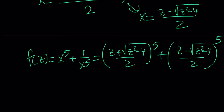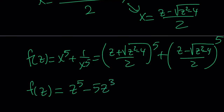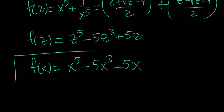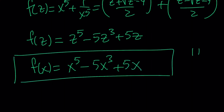We have a sum of two 5th powers where the binomial theorem applies. All the radicals cancel out because they appear with plus and minus signs. The result is f of z equals z to the 5th minus 5z cubed plus 5z, and therefore f of x equals x to the 5th minus 5x cubed plus 5x. And this brings us to the end of this video. Thank you for watching, I hope you enjoyed it.